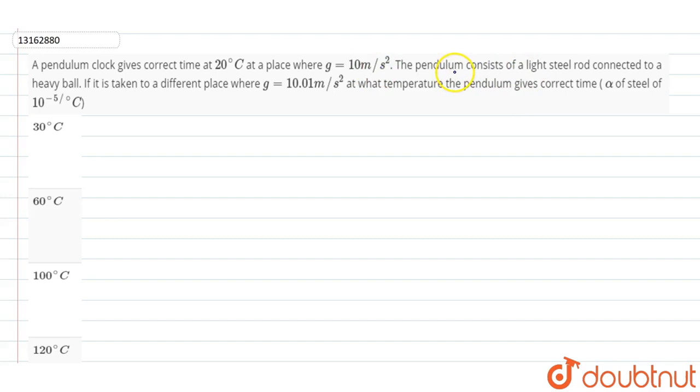We have the same pendulum clock which is a light steel rod connected to a heavy ball. This will be at a different place where the acceleration due to gravity g value is 10.01 meters per second square. So we find out at what temperature the pendulum clock gives correct time at this place.